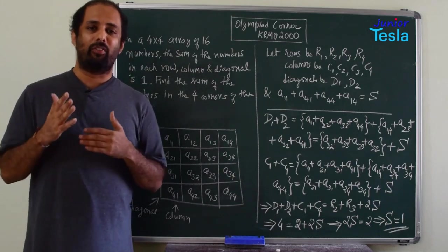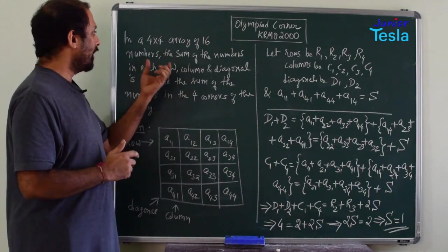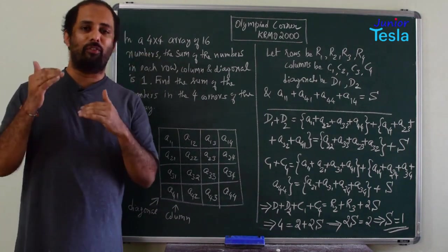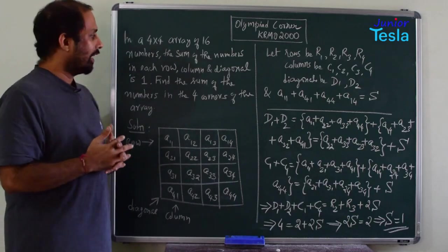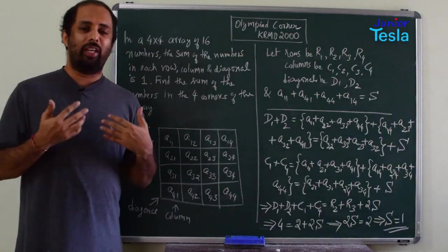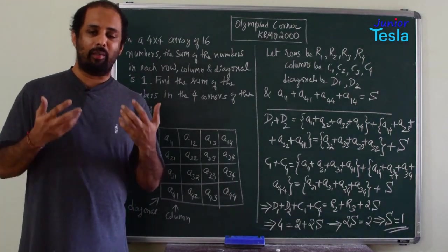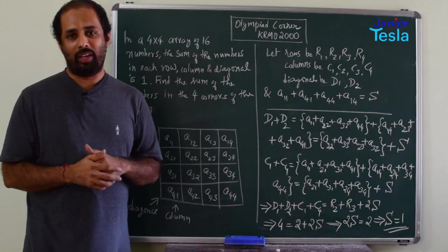Array means it is a combination of rows and columns and here we have taken a 4 by 4 array. There are 4 rows and 4 columns, so totally there are 16 entries. They are saying you take any row, any column, any diagonal, the sum of all those entries is equal to 1. I have taken one diagram and I have taken the entries as a11, a12, a13, a14, etc.